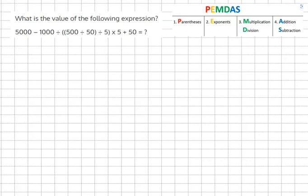What is the value of the following expression? 5,000 minus 1,000 divided by 500 divided by 50 divided by 5 times 5 plus 50.